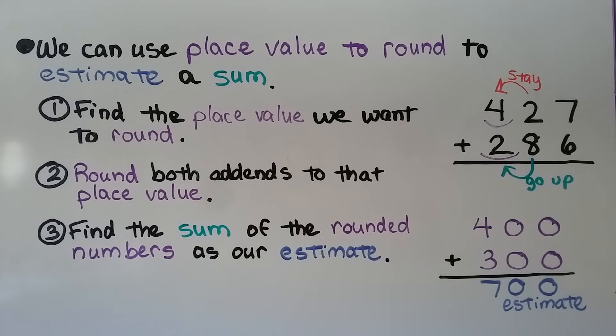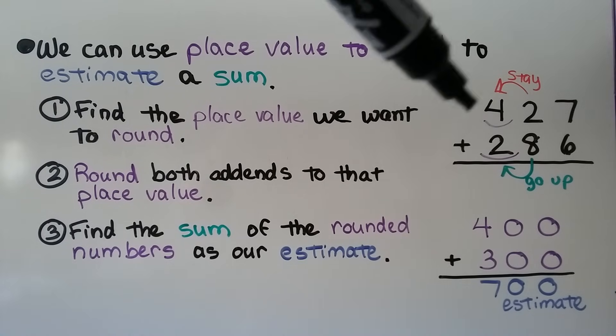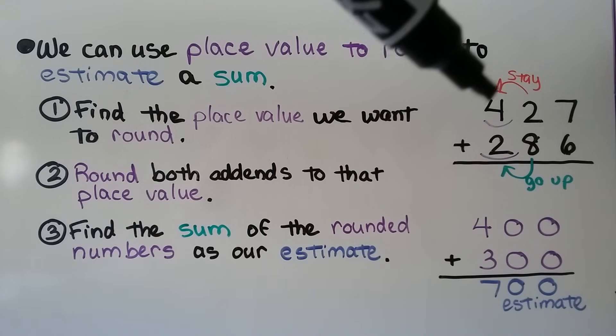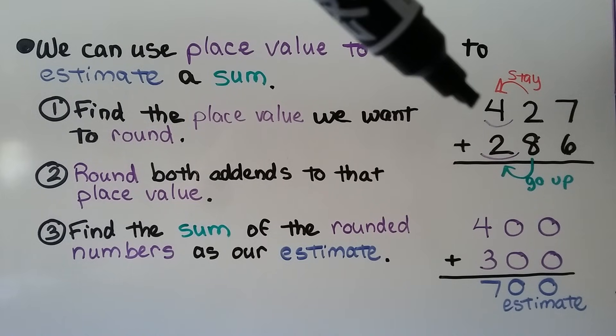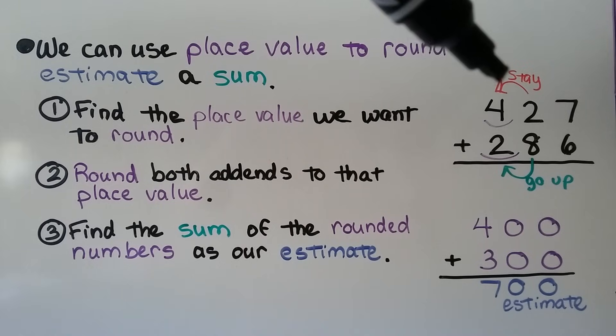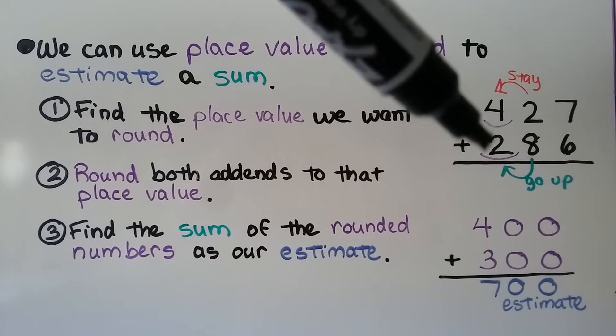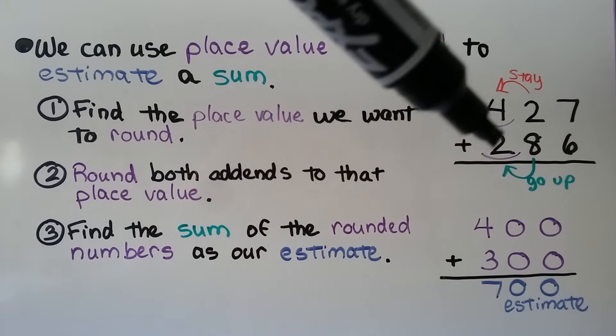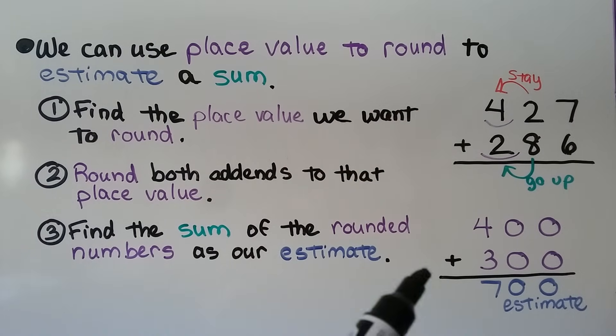We can also use place value to round to estimate a sum. We have 427 plus 286. We find the place value we want to round. So we're going to round to the hundreds place to get a good estimate. We're rounding this 4 to the closest 100. The 2 is telling the 4 to stay the same. So we get a 400. For the 286, we're rounding to the nearest 100. So this 8 tells the 2 to go up to a 3, and then it becomes zeros. We add 400 and 300 and get an estimate of 700.